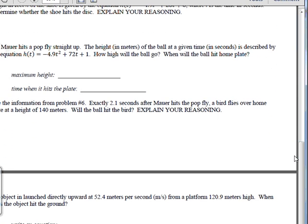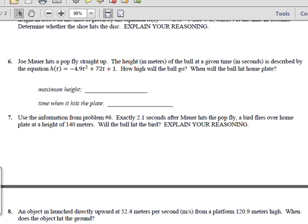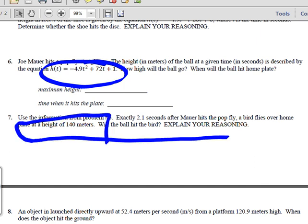All right. Problem 7 here is... Exactly 2.1 seconds after Maurer hits the pop fly, a bird flies over home plate at a height of 140 meters. Can you put that 140 meters in for the time? No. It's a height. So you've got to put it in for a Y. So when you're doing this equation for number 6, you're going to put in this on Y1. This right here is telling you that you have another Y, and this one is Y equals 140. And you see where those two intersect. And that'll be the time when... So the question is, will the ball hit the bird? Well, if those two intersect each other, then in theory, they would. All right. So this is number 7 where you'd have an example of putting in a second Y equation into the calculator. Any questions?